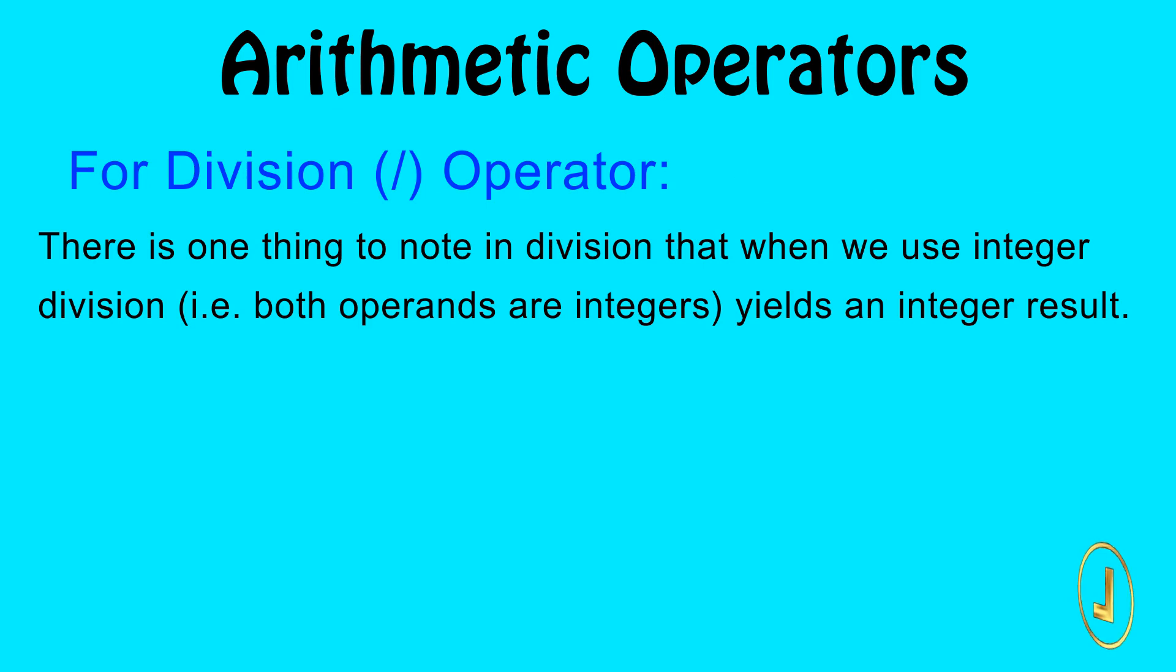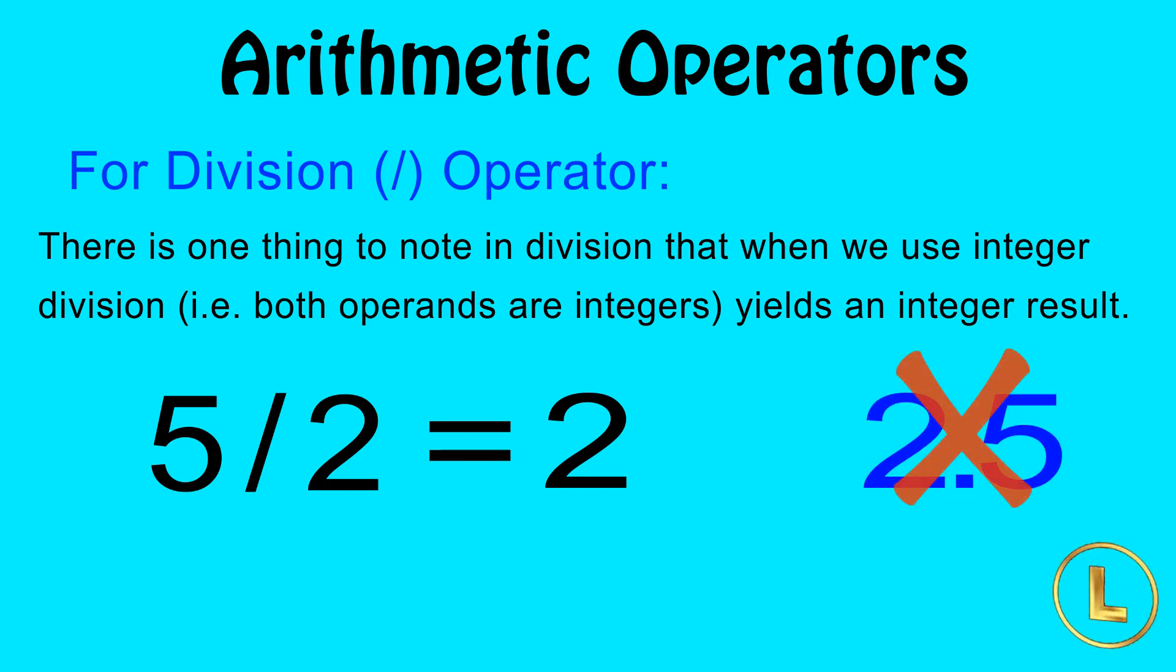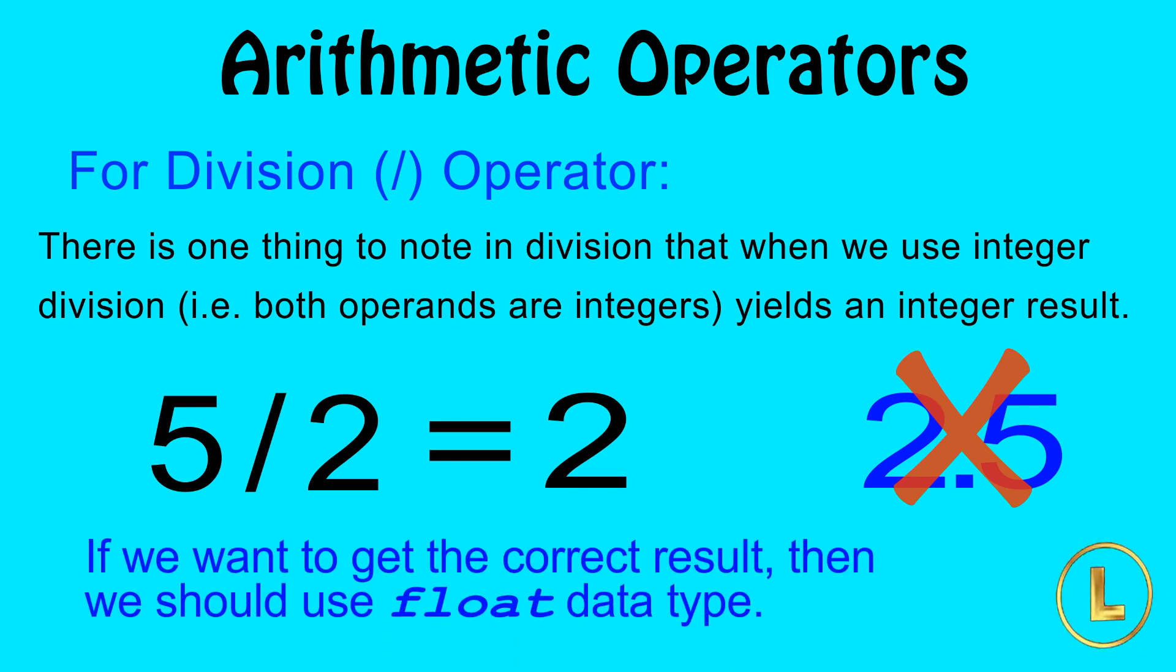There is one thing to note in division that when we use integer division, that is both operands are integers, it yields an integer result. This means that, for example, if you are dividing 5 by 2, it will give integer result as 2 instead of actual result 2.5. Thus in integer division, the result is truncated to the whole number, the fractional part after decimal is ignored. If we want to get the correct result, then we should use float data type.